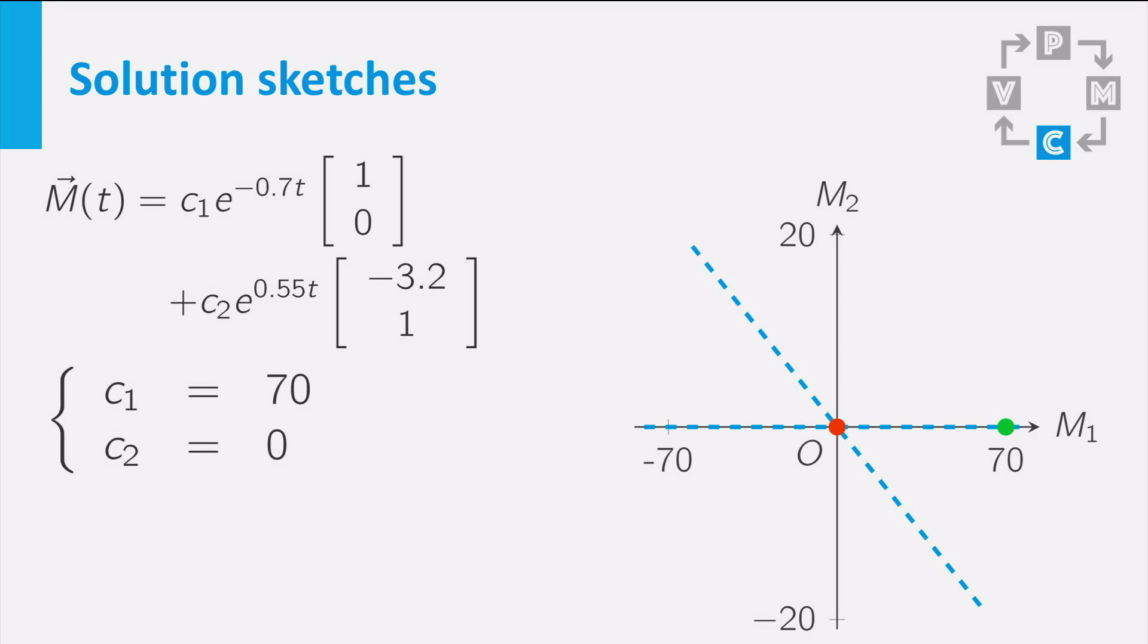First we take c1 at 70 and c2 equal to 0. So our solution starts in 70, 0. In this case, the solution is a product of an exponential function and a vector. If you increase the time t, the exponential function decreases and eventually becomes close to 0. But this means that the entire solution becomes the 0 vector, or in another word, the origin.